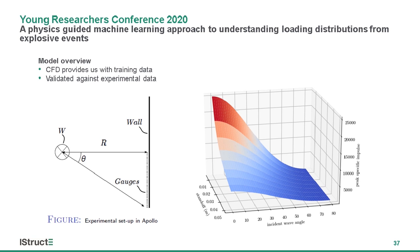The left-hand side here shows roughly what the experimental schematic is. We have a spherical charge of mass W located at a distance R away from a wall. Along that wall are pressure gauges spaced linearly from 0 to 80 degrees, and this gives us an output of the pressure time history — how the pressure varies with time. By integrating this pressure time history, we can get an impulse time history. If we take the maximum of that impulse time history at each point, we get the maximum load that each point experiences. In other words, these gauges output the loading distribution that we're interested in.